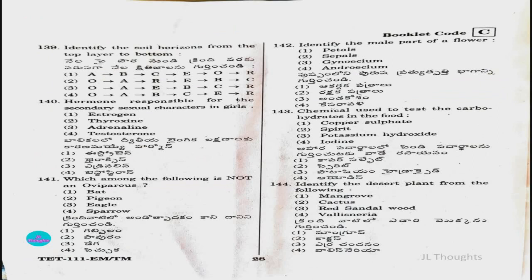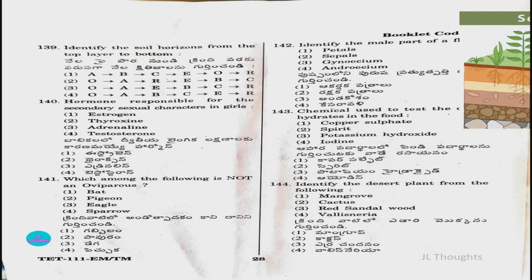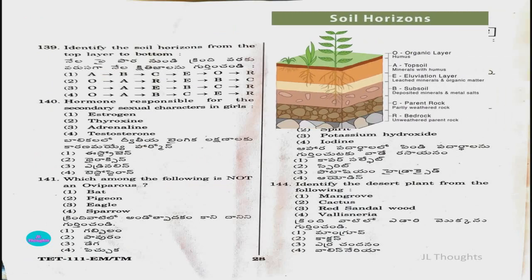Question number 139: Identify the soil horizons from top layer to bottom. From the diagram on the right, the layers are: O (organic layer), A (topsoil), E (eluviation layer), B (subsoil), C (parent rock), and R (bedrock). So the answer is option three: O, A, E, B, C, R.